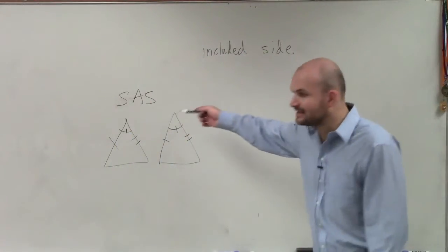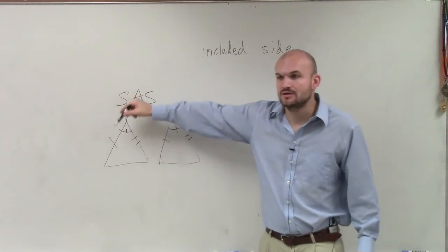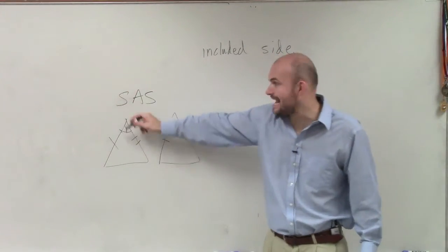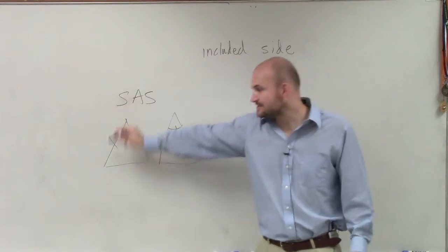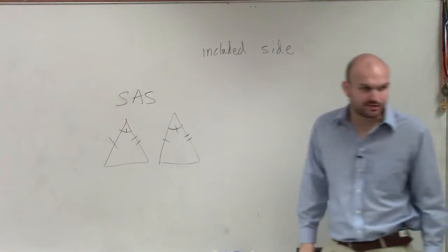So we could prove that these two triangles were congruent because they had angle—sorry, side, angle, side. Side, angle, side. Notice how the angle is in between the two sides.